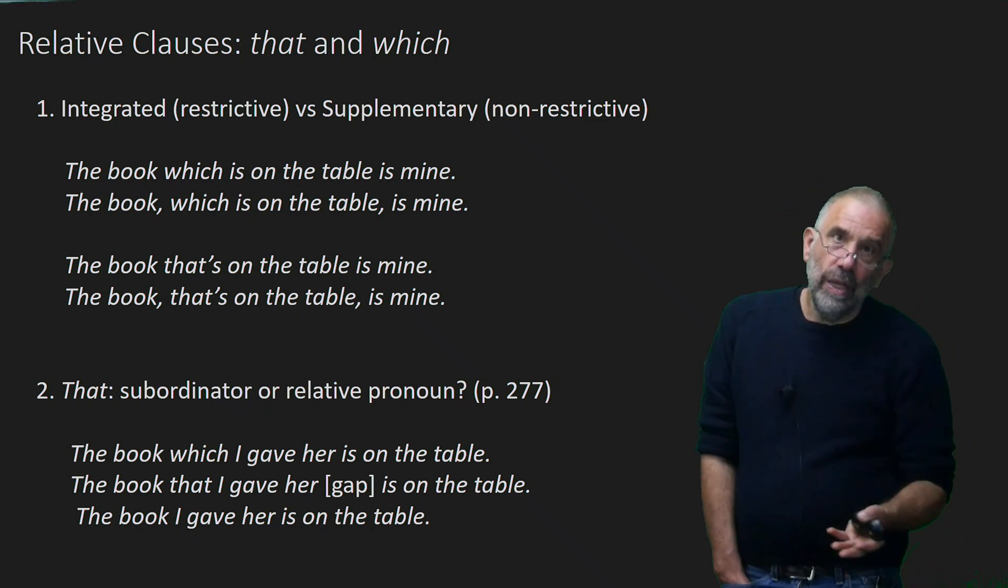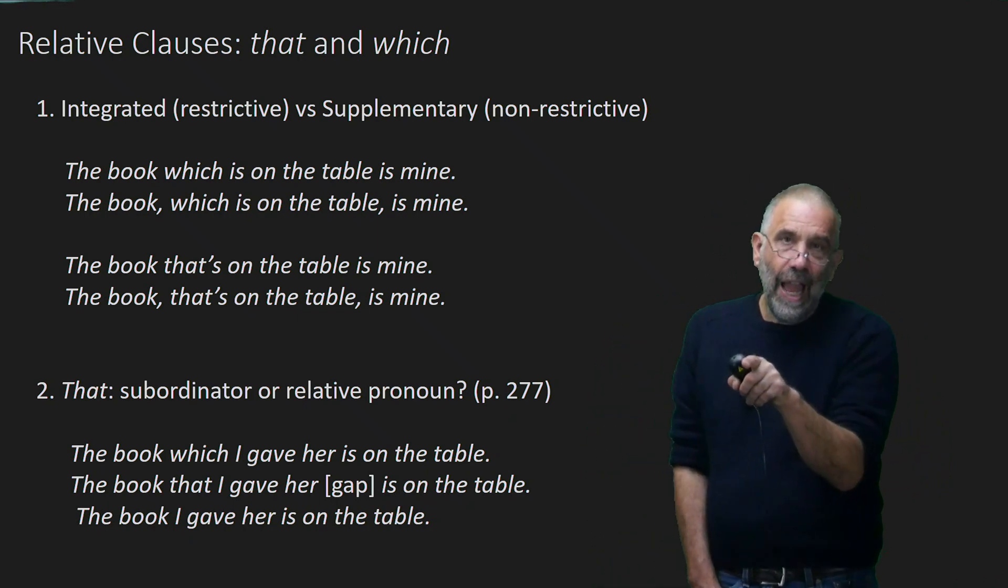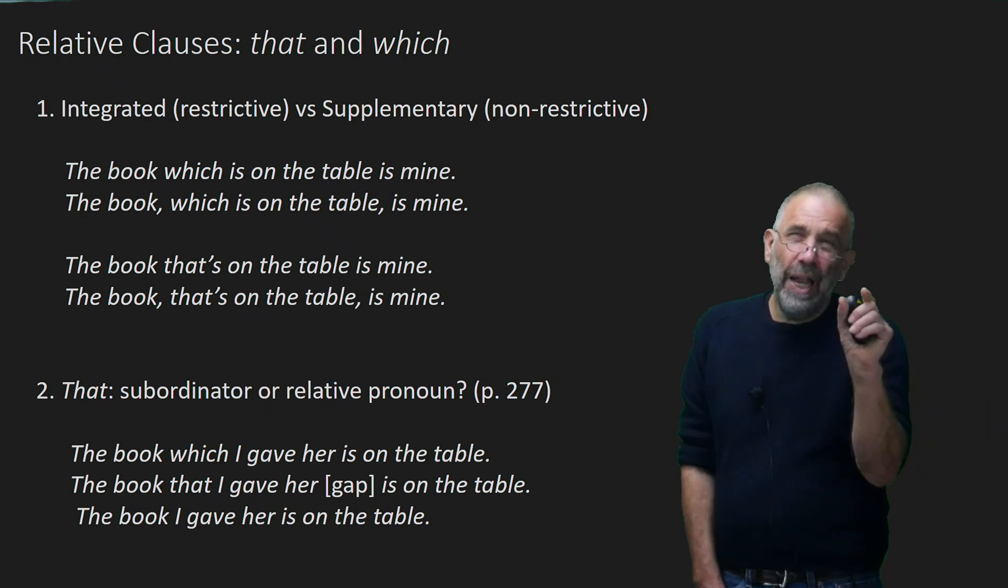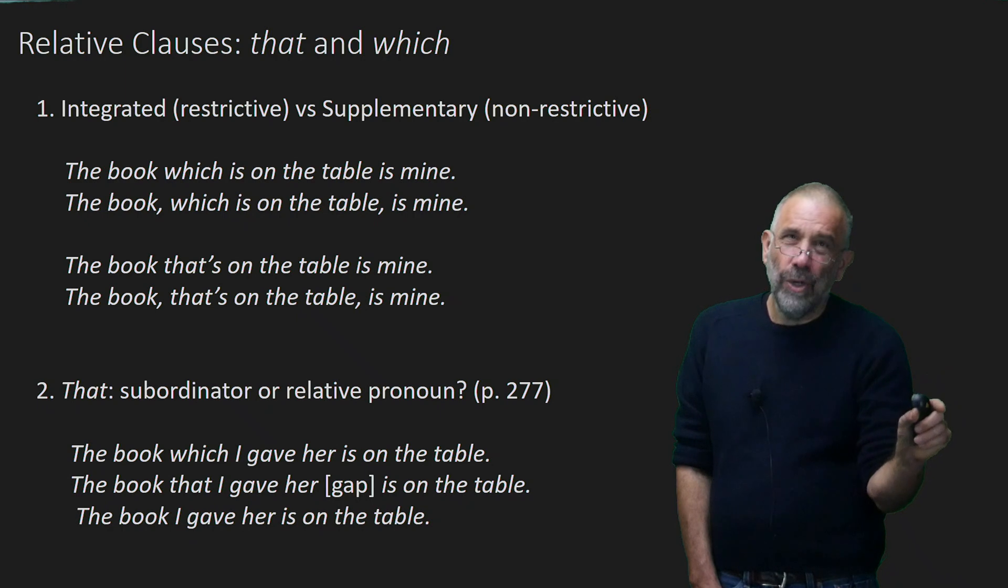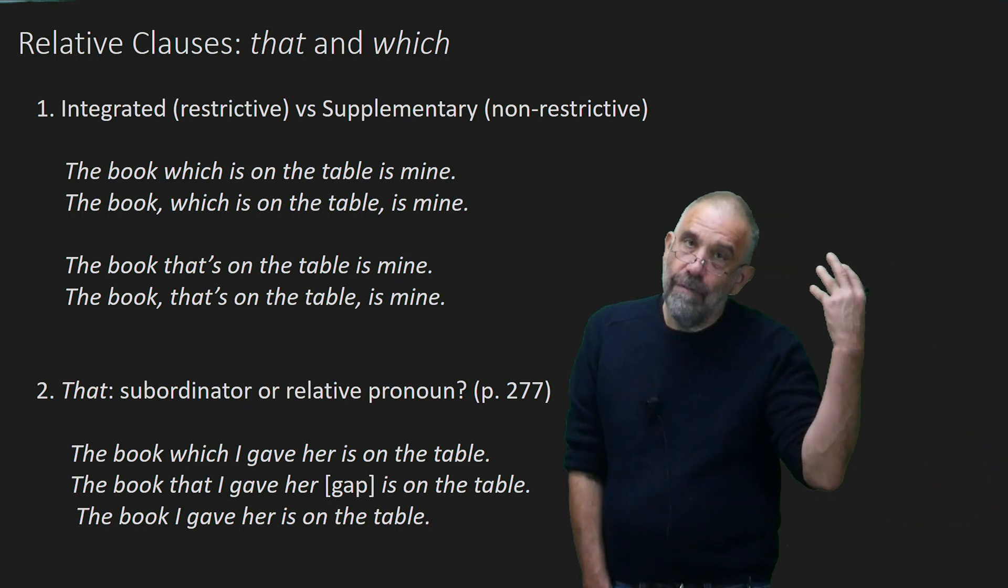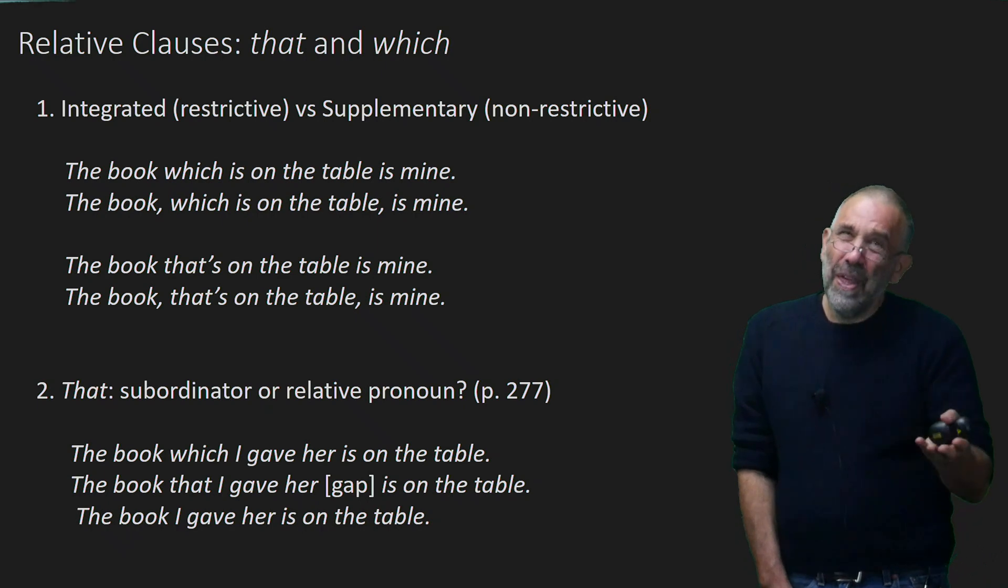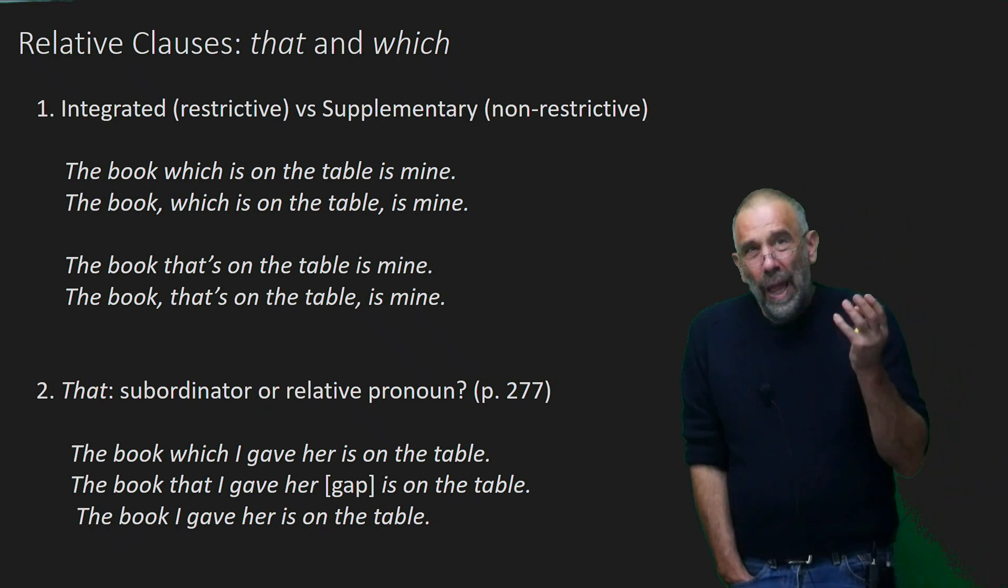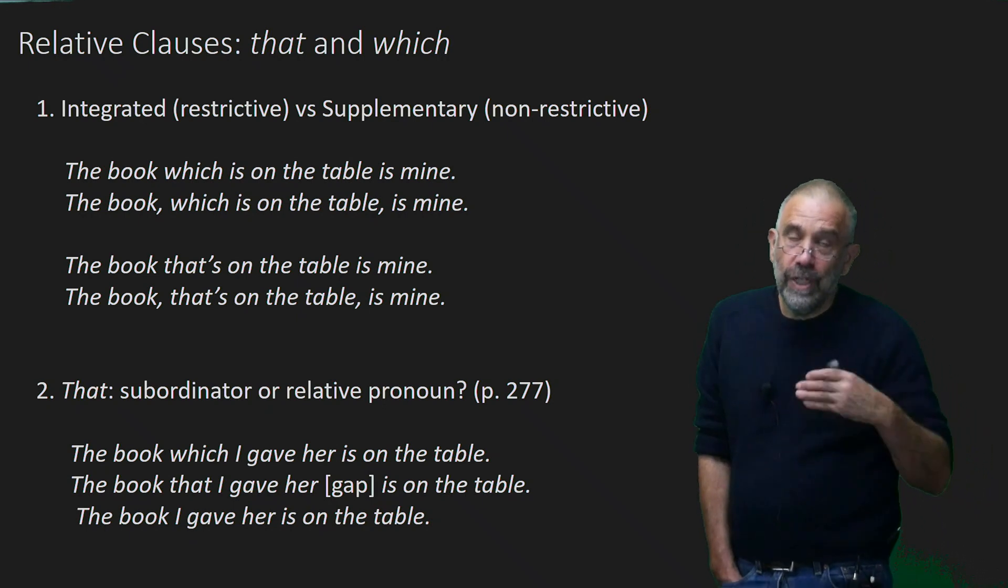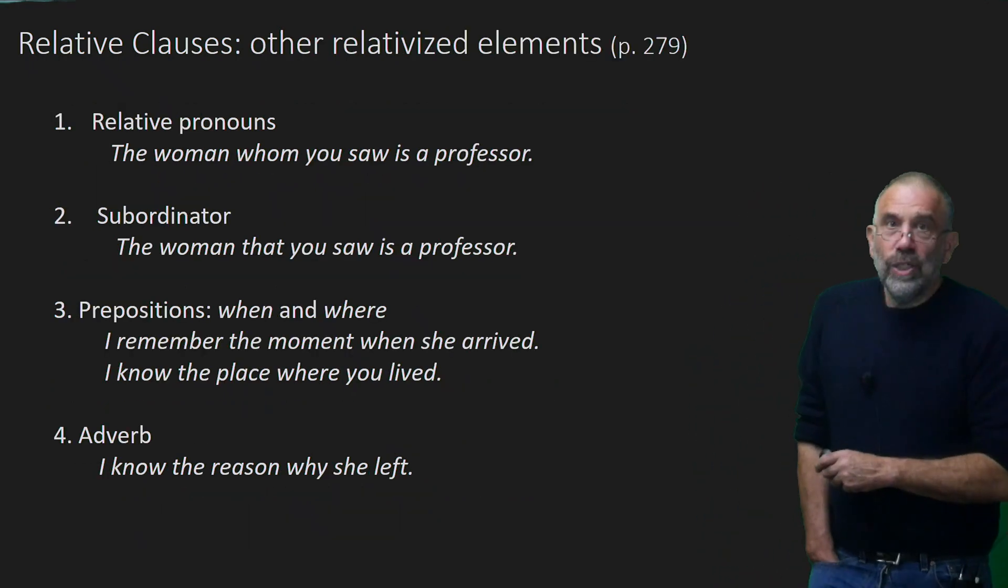So the final sentence, the book I gave her is on the table. I believe they would analyze that as leaving out the that. I know she's here, so I know that she's here. That subordinator can be left out. But because we use these all the time, it seems to me we're as likely to fill it in in our brains as which. The book which I gave her is on the table. They feel the same. And so I don't think it's worth pushing that point too hard. But I'd like you to at least be aware of it so you don't get confused by the explanations they're giving.